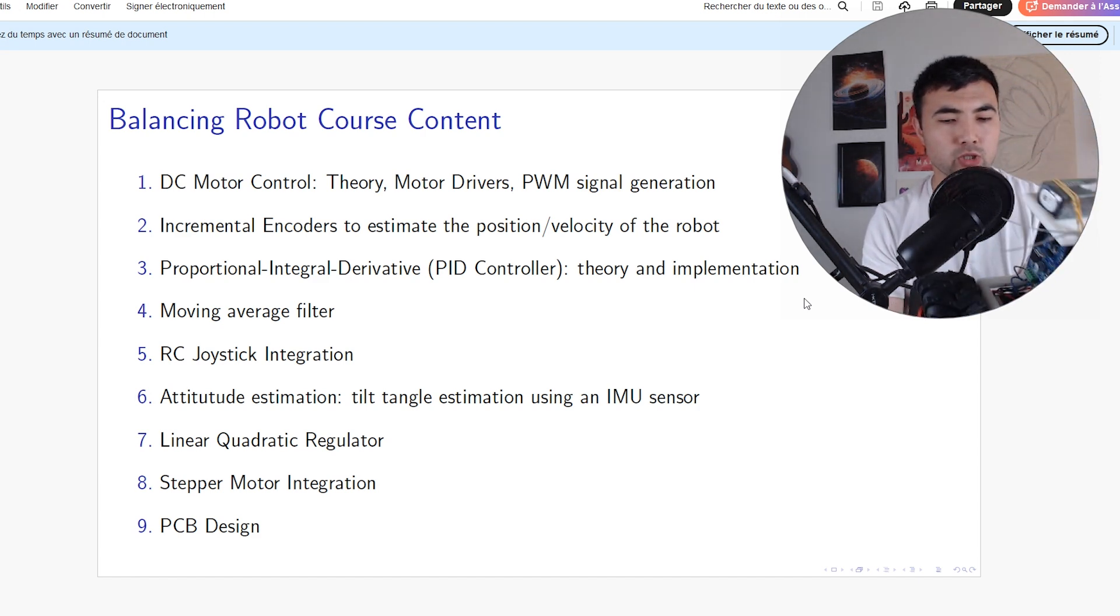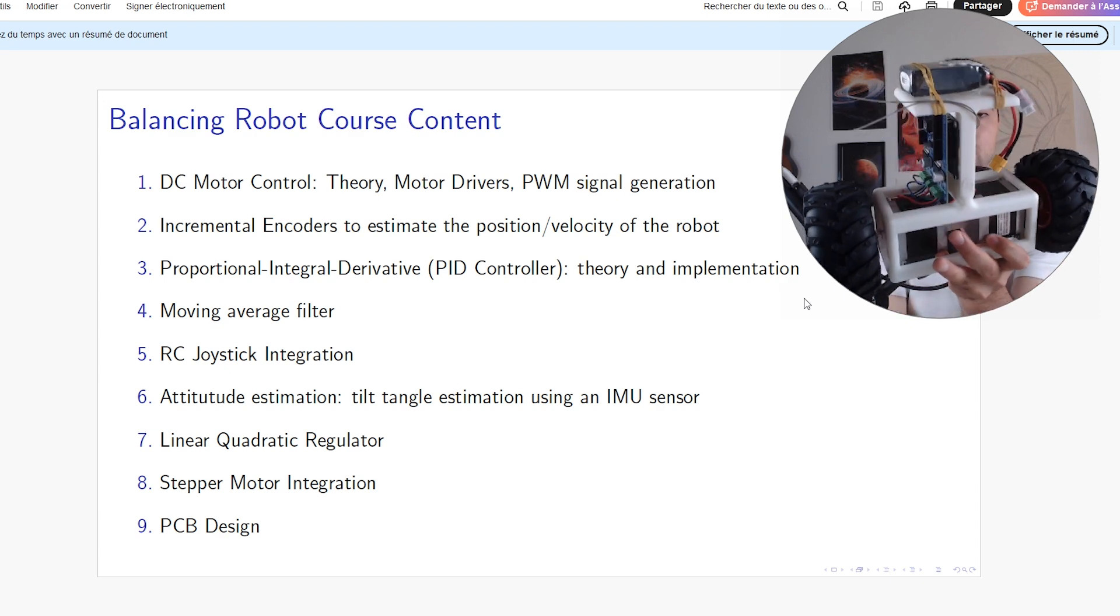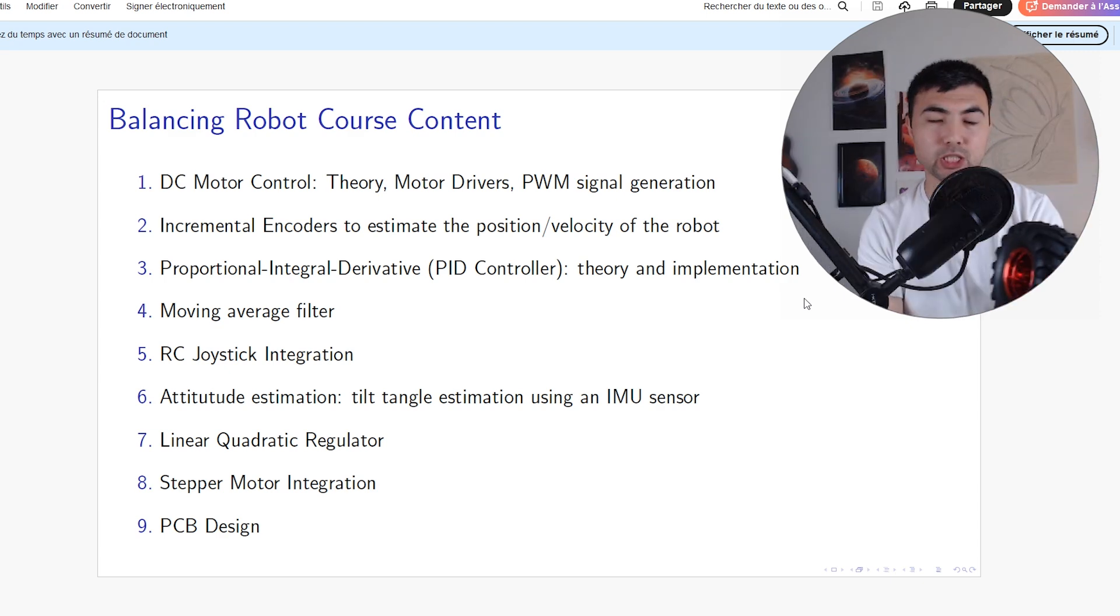Once you have the IMU sensor and the motors, you have to implement an algorithm to keep the balancing robot in an upright position. That's a really interesting engineering problem. We are going to cover all these topics step by step.